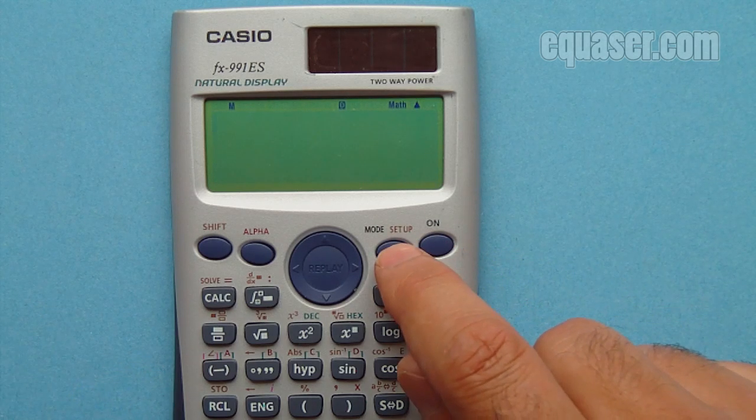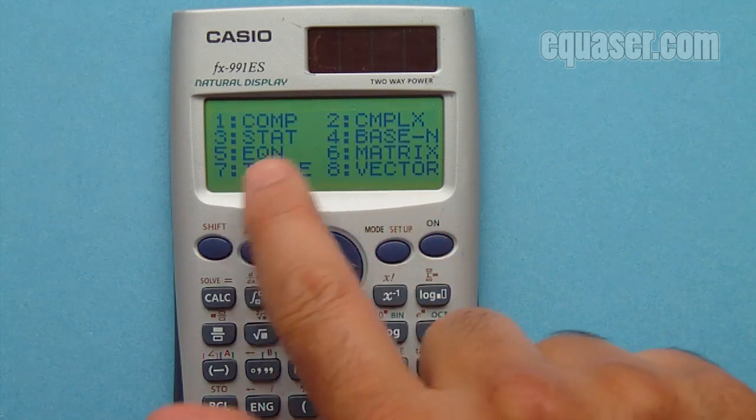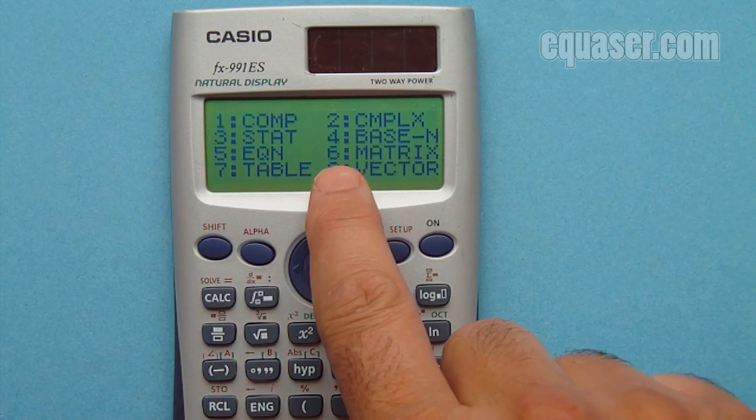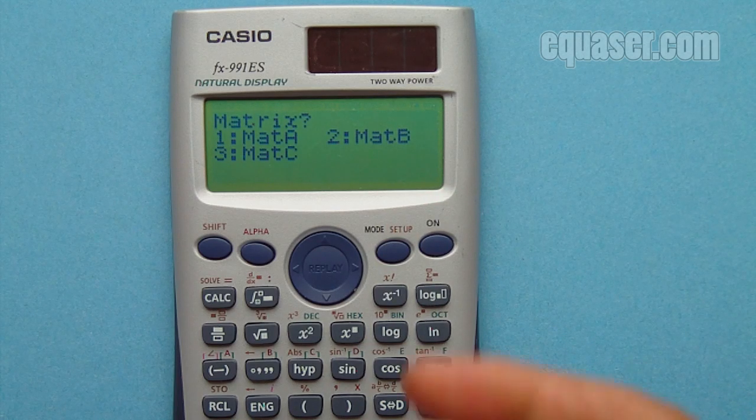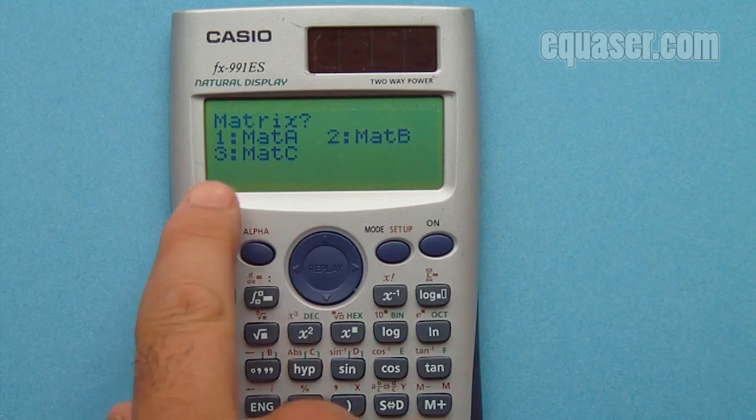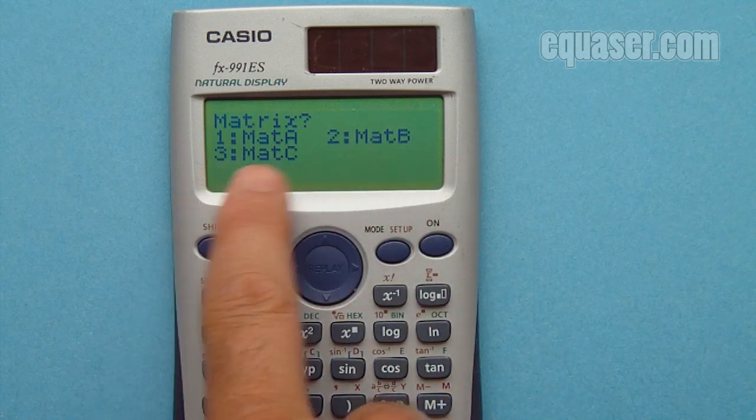I press the mode button. As you can see on the screen we have a lot of options. Number 6 refers to the matrix. I press 6, and as soon as I press that button I am presented with three options.